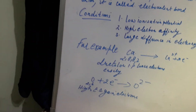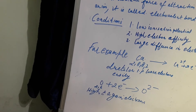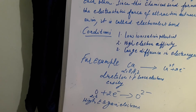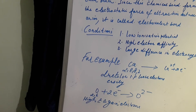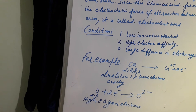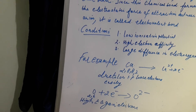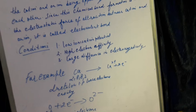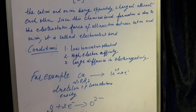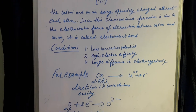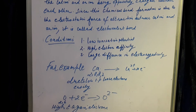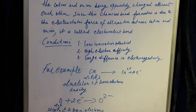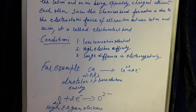Whereas the electronic configuration of oxygen is 2, 6. In order to obtain a stable electronic configuration of the nearest noble gas, which is neon, it has to gain two electrons. Oxygen has very high electron affinity, so it will quickly gain the two electrons lost by calcium to form the oxide ion, resulting in the formation of a calcium cation and an oxide anion. Both being oppositely charged, they attract each other with a very strong electrostatic force, and this type of bond is known as an ionic bond.